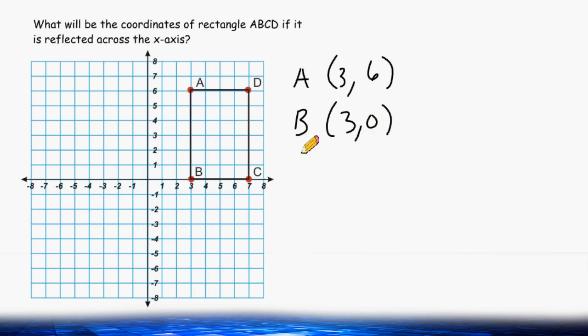Point C is located at (7, 0). And point D is located at (7, 6).